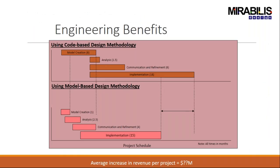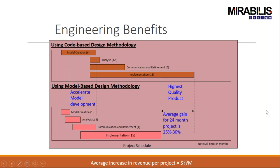System-level modeling provides significant time and cost savings. The traditional approach takes around 18 months total: 6 months for model creation, 1.5 months for analysis, and 6 months for communication and refinement. Using system-level simulation, model creation takes 1 month, analysis takes 2.5 months, and communication takes 4 months — saving substantial time and money.